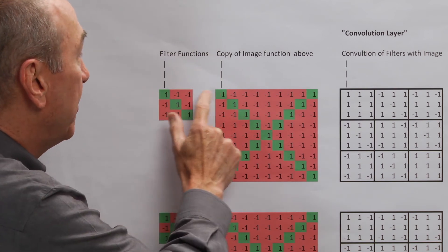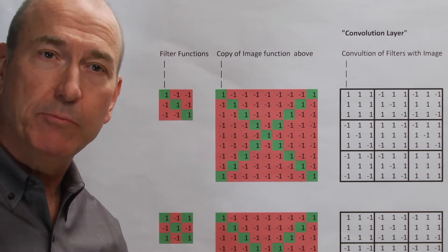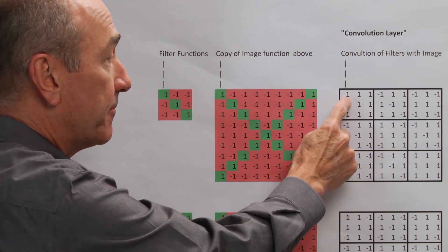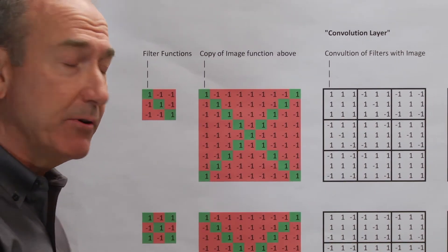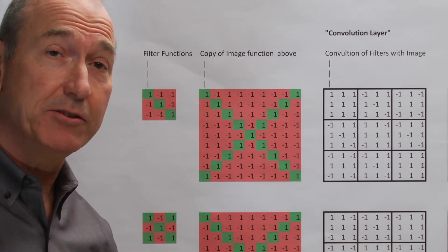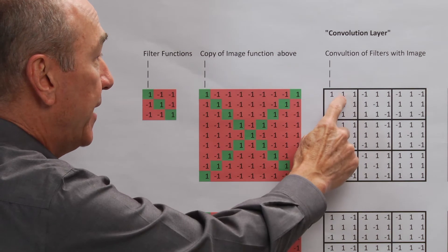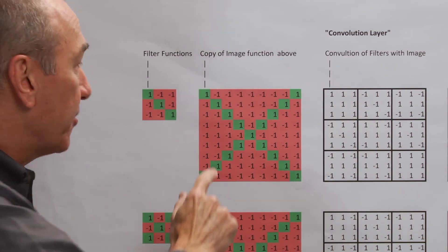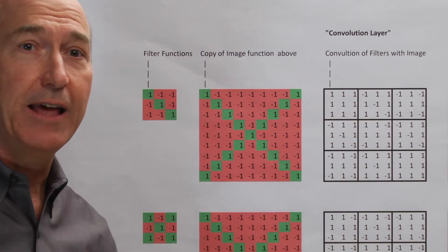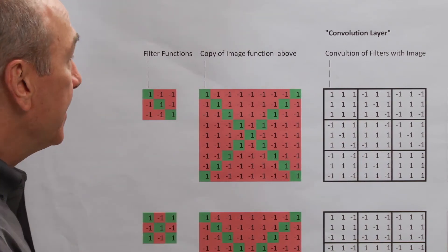This green one would overlay that green one, so we multiply those together - 1 times 1 equals 1, and we'll store the answer over here. Then we'll do the same thing with the next number - a minus 1 times a minus 1, that also equals positive 1, and we store that here. We're going to multiply this number times that one stored here, and so forth for the rest of that square.